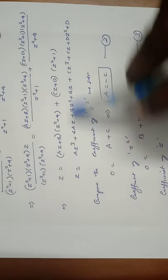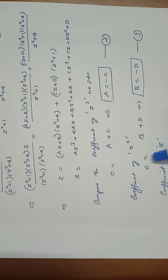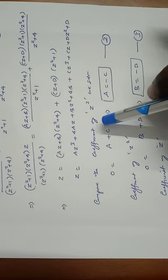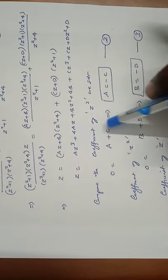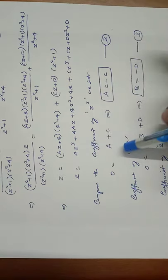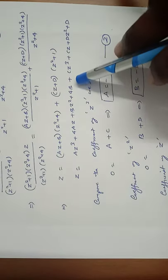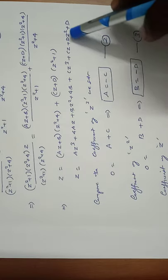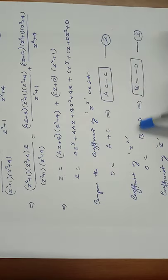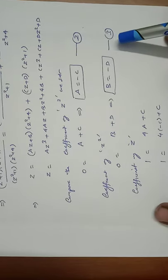Comparing coefficients of z²: the left-hand side has no z² term, so it equals 0. The right-hand side gives B + D. Therefore B + D = 0, so B = −D. This is equation number 3.